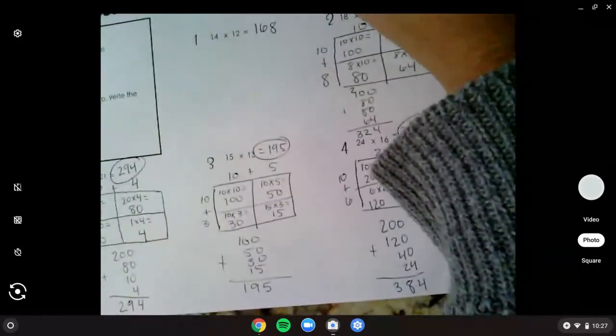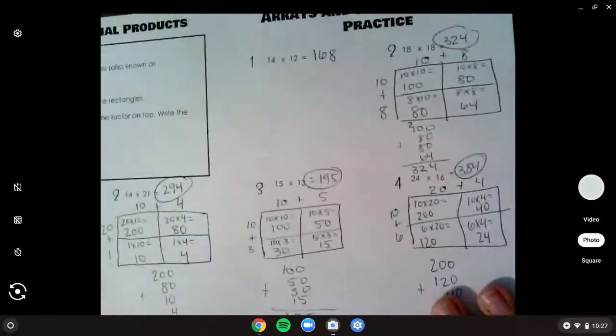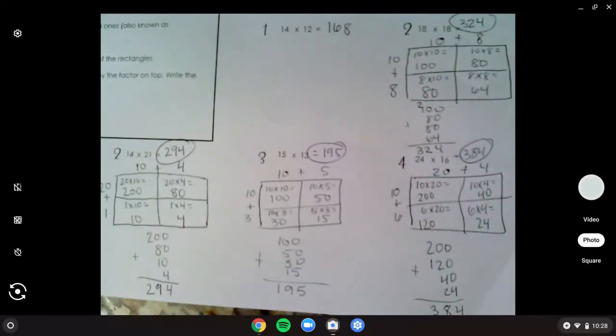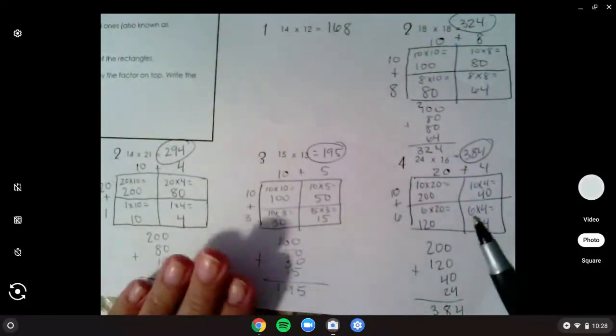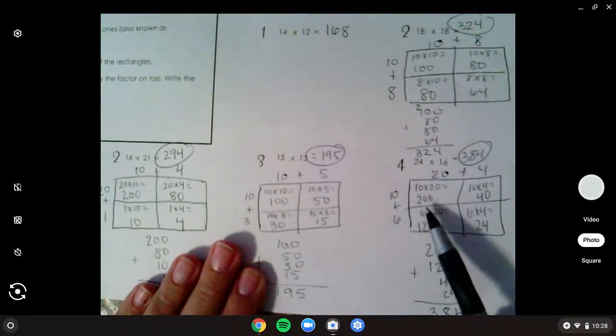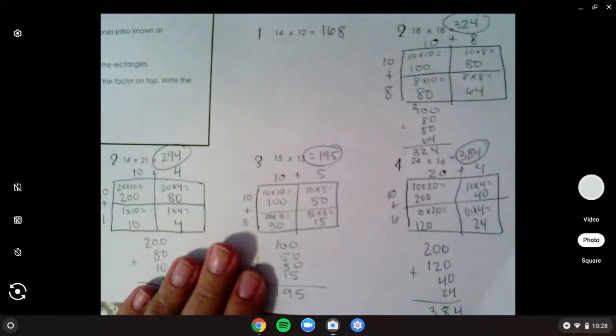And how did that go for us? Feeling okay? The biggest thing is to remember to slow down and make sure you're doing your math facts right. Use that handyman math fact trick when you're multiplying by a multiple of 10.